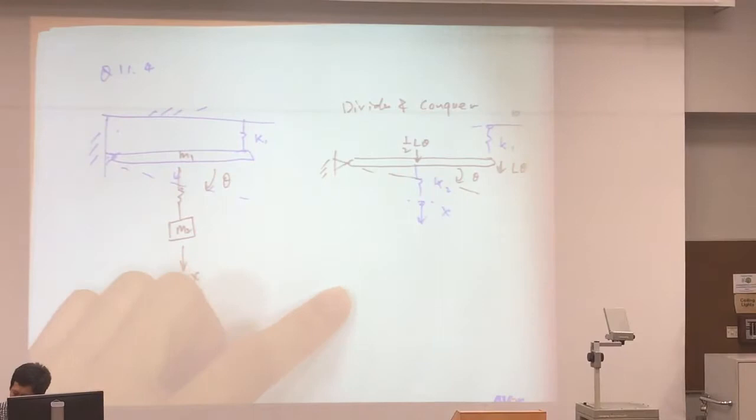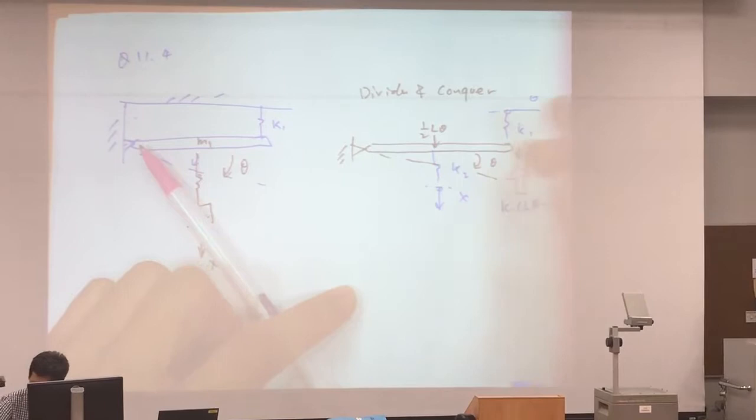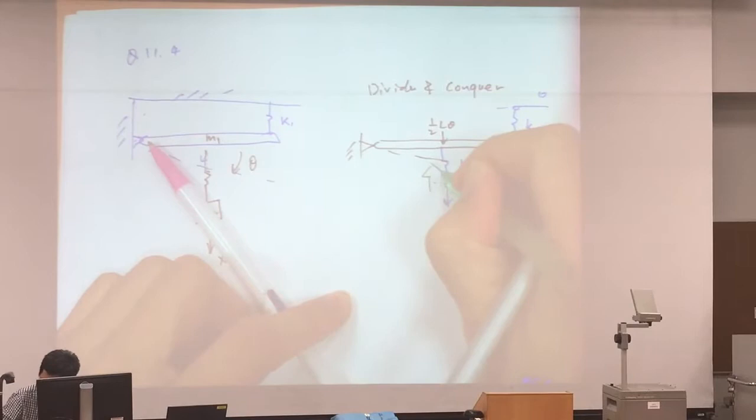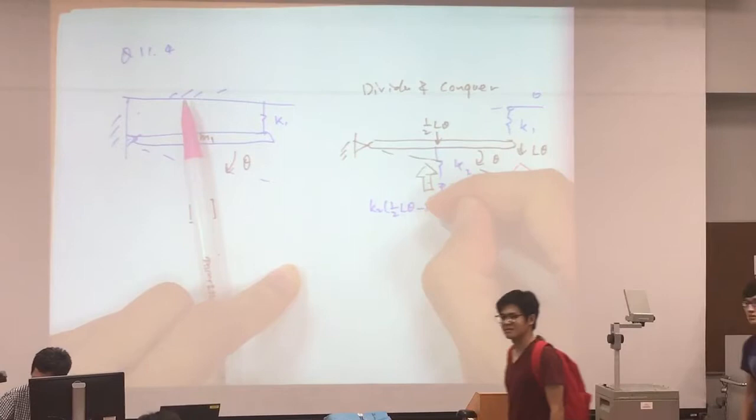So as such, what are the forces acting on these rocks? There are two forces. The first force is the tip spring force, it is K1 L theta minus X. The other force is the midspan spring that opposes the motion. The spring force is K2 half L theta minus X.